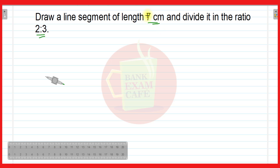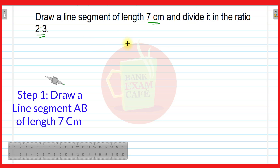First, you have to draw a line segment of 7 centimeters with the help of a scale. Here I am drawing a line segment of more than 7 centimeters because 7 centimeters will not be clearly visible on mobile. So I take a distance more than 7 centimeters. Name it as AB — this is line segment AB. Let it be of 7 centimeters.